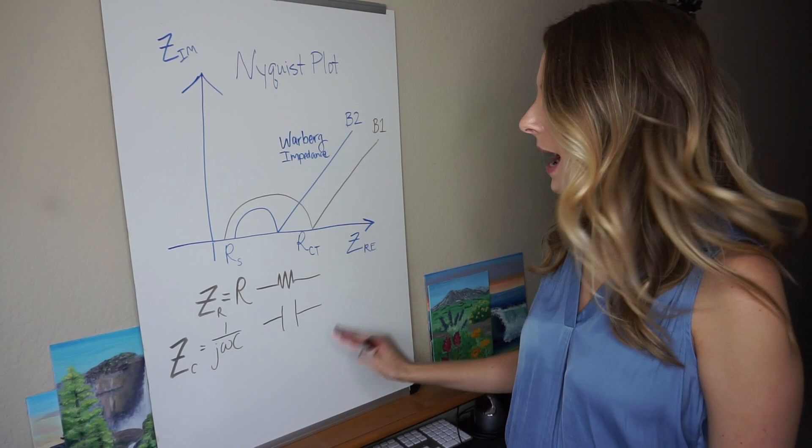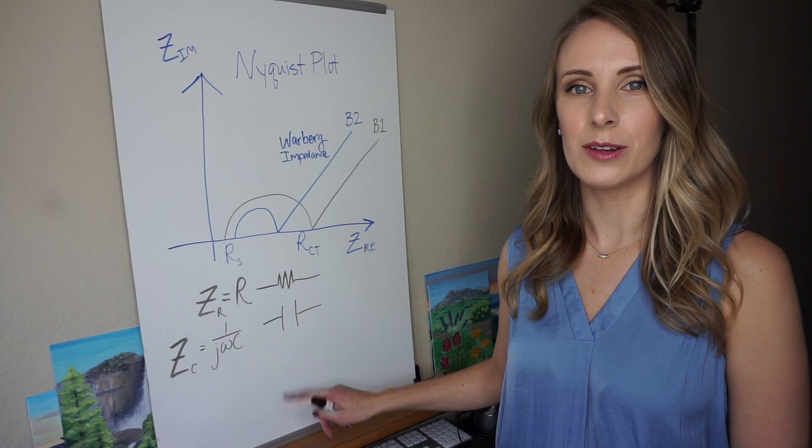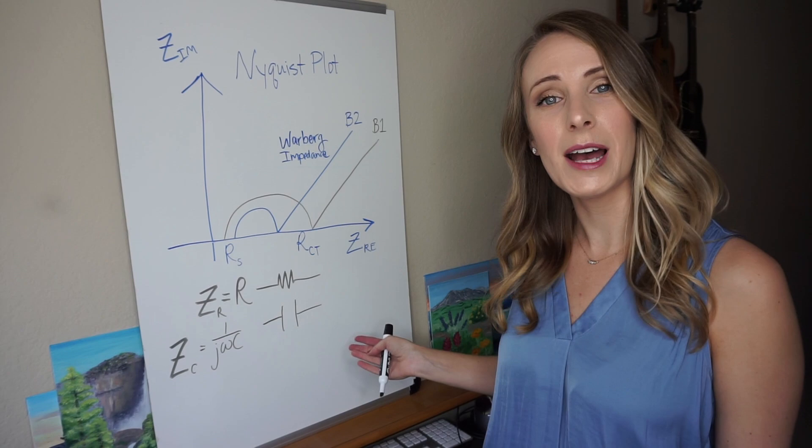However, for a capacitor, the impedance equals one over j omega c, which is an imaginary number times the frequency times the capacitance of the capacitor.